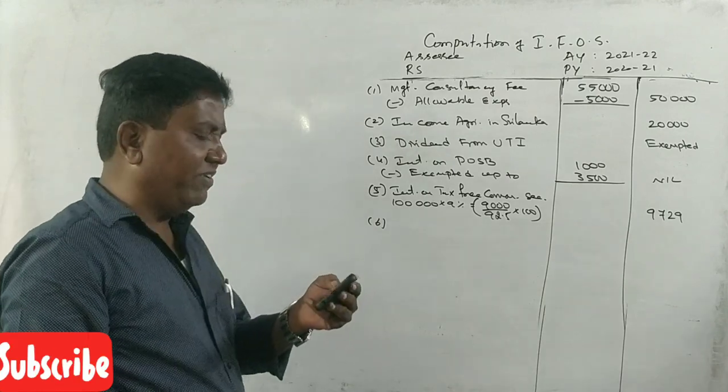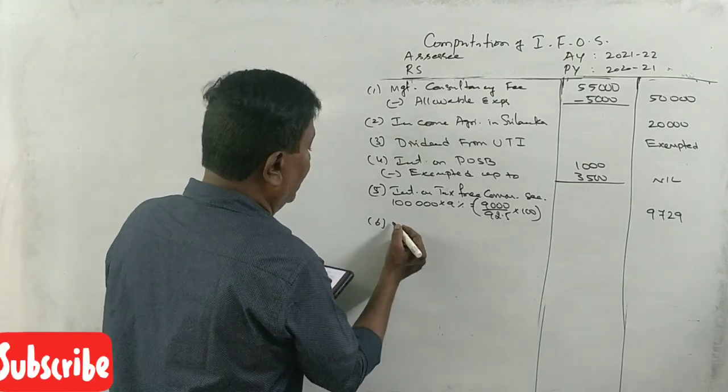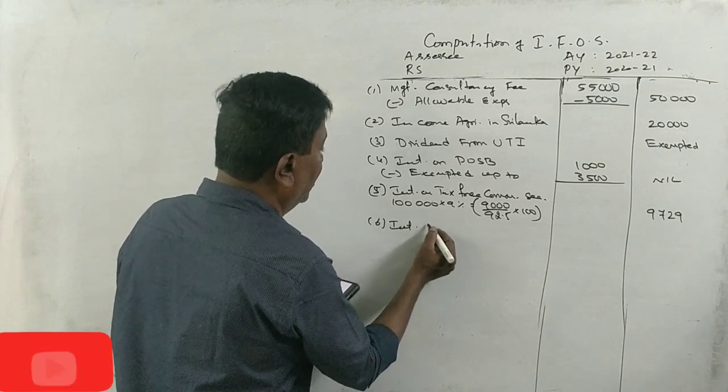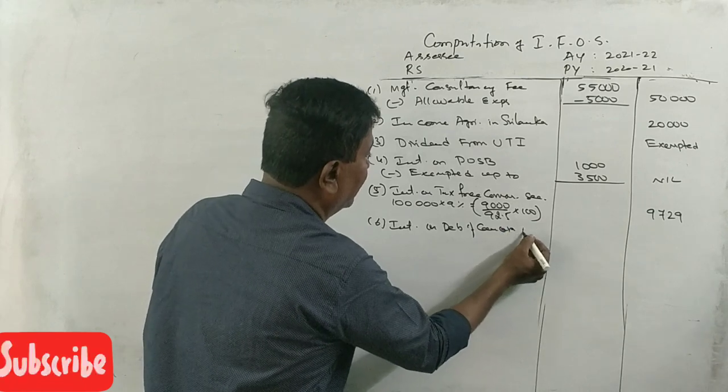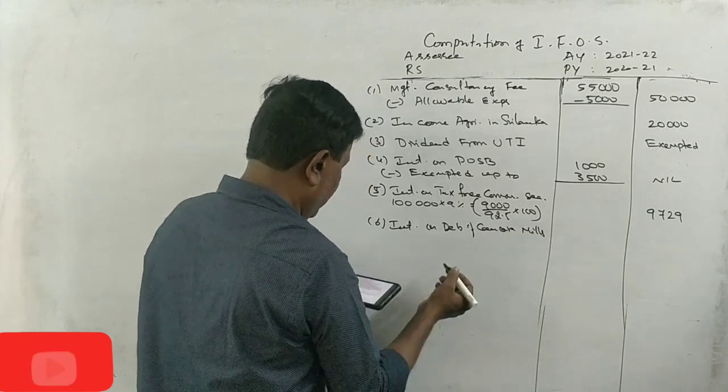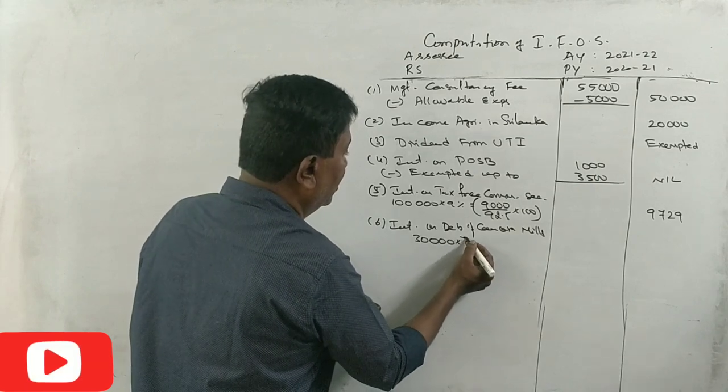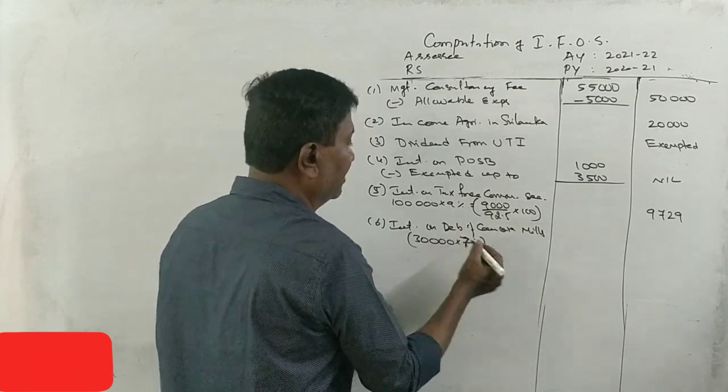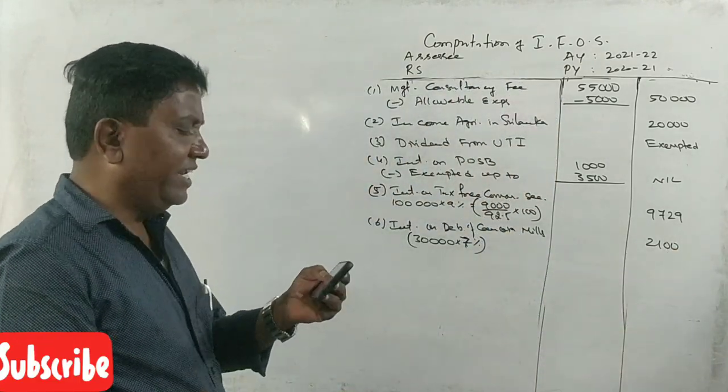30,000 7% debentures of camera mills, interest on debentures of camera mills, 30,000 into 7%, 2,100.